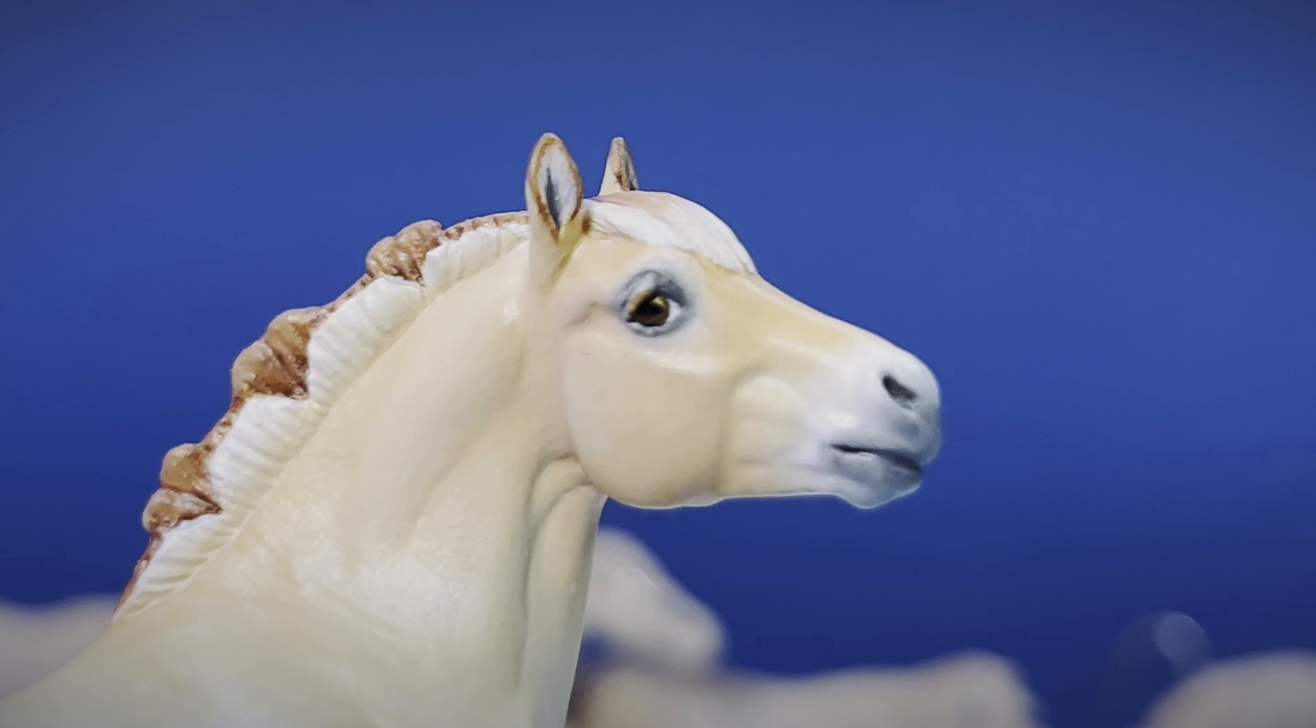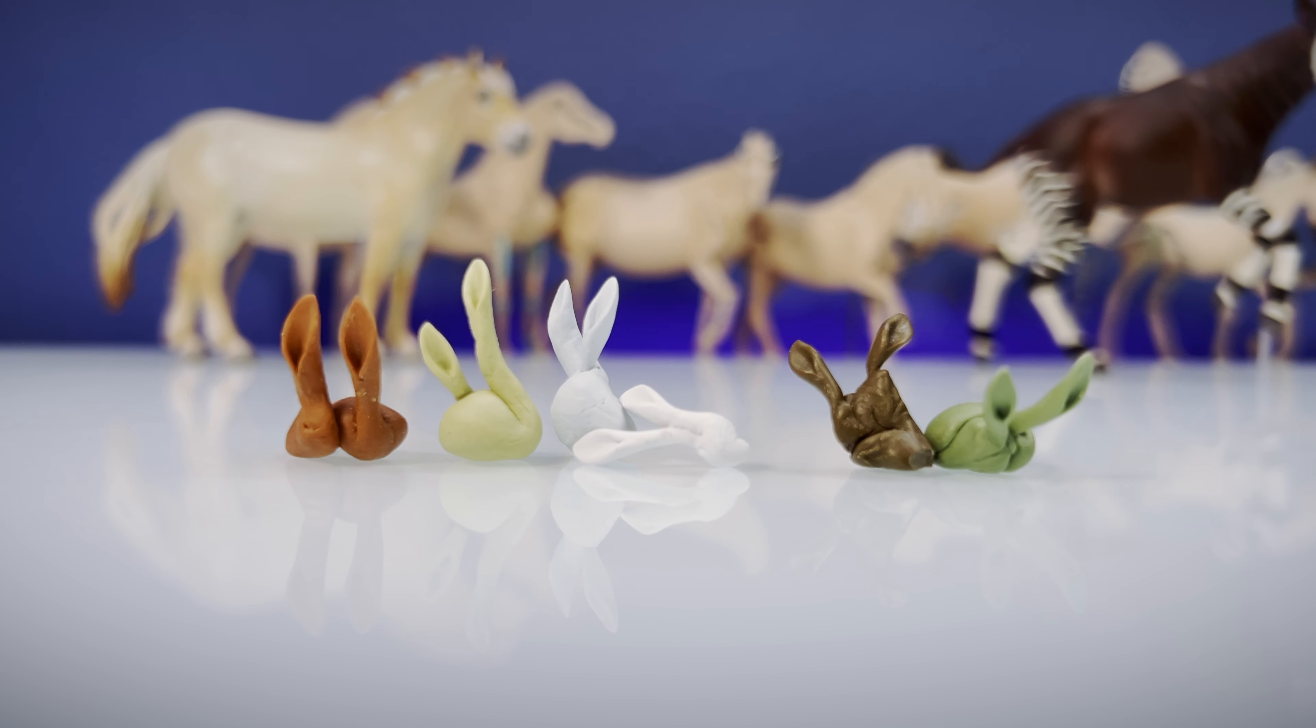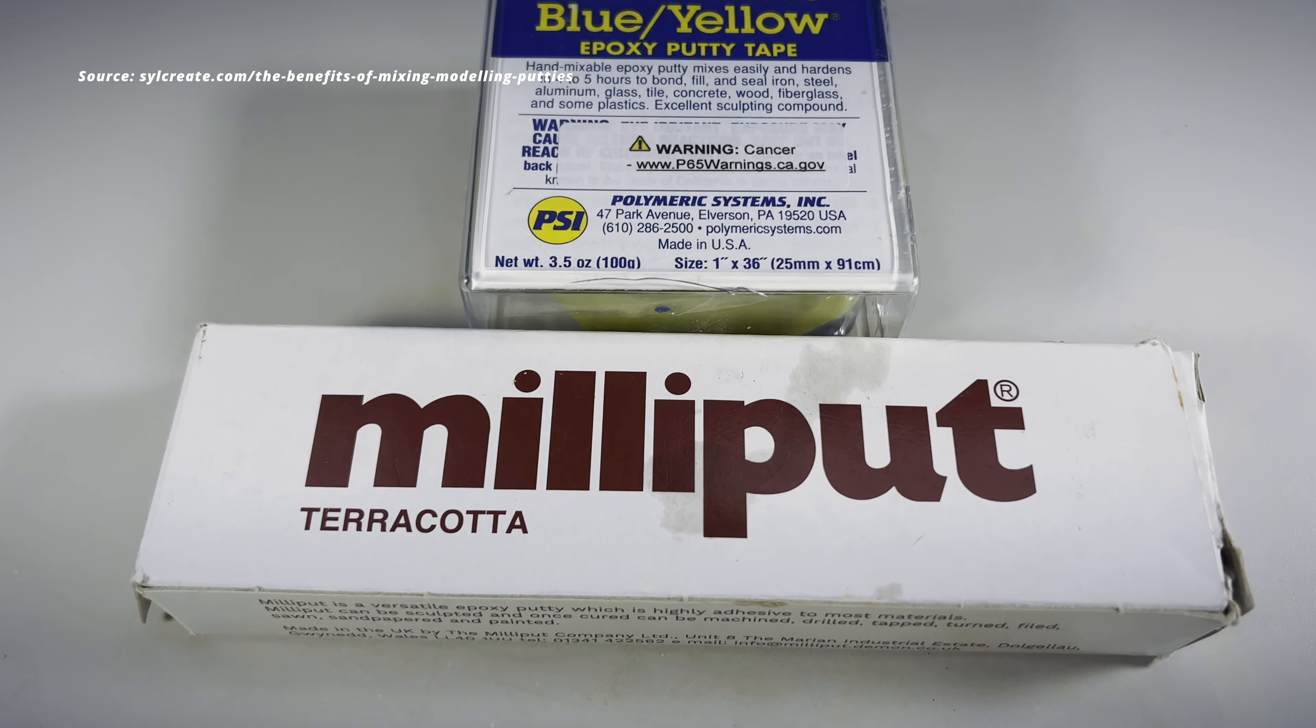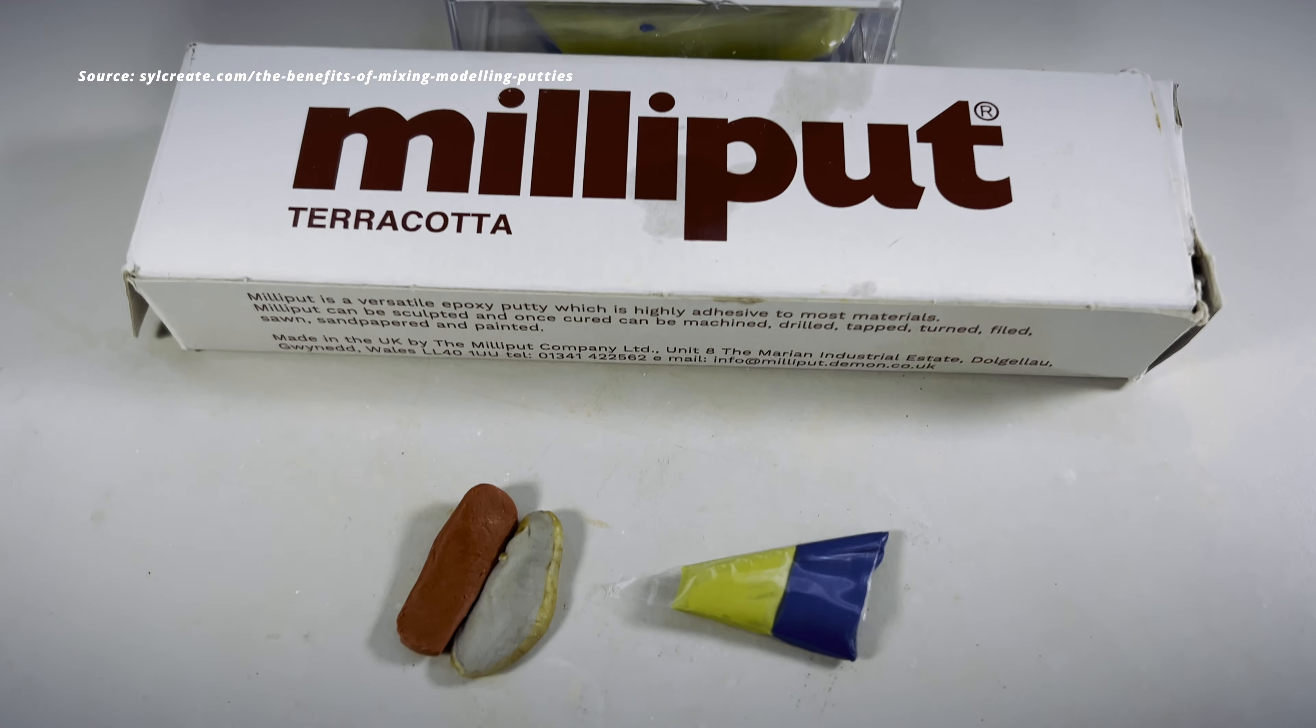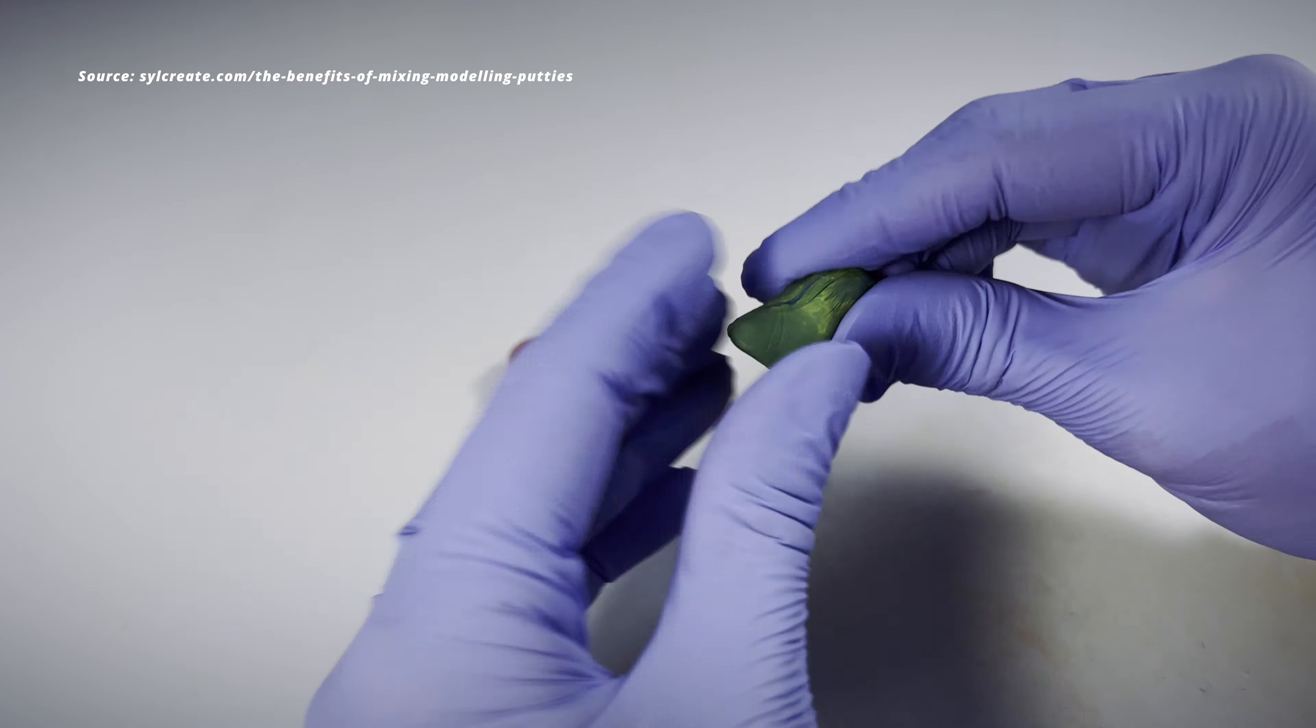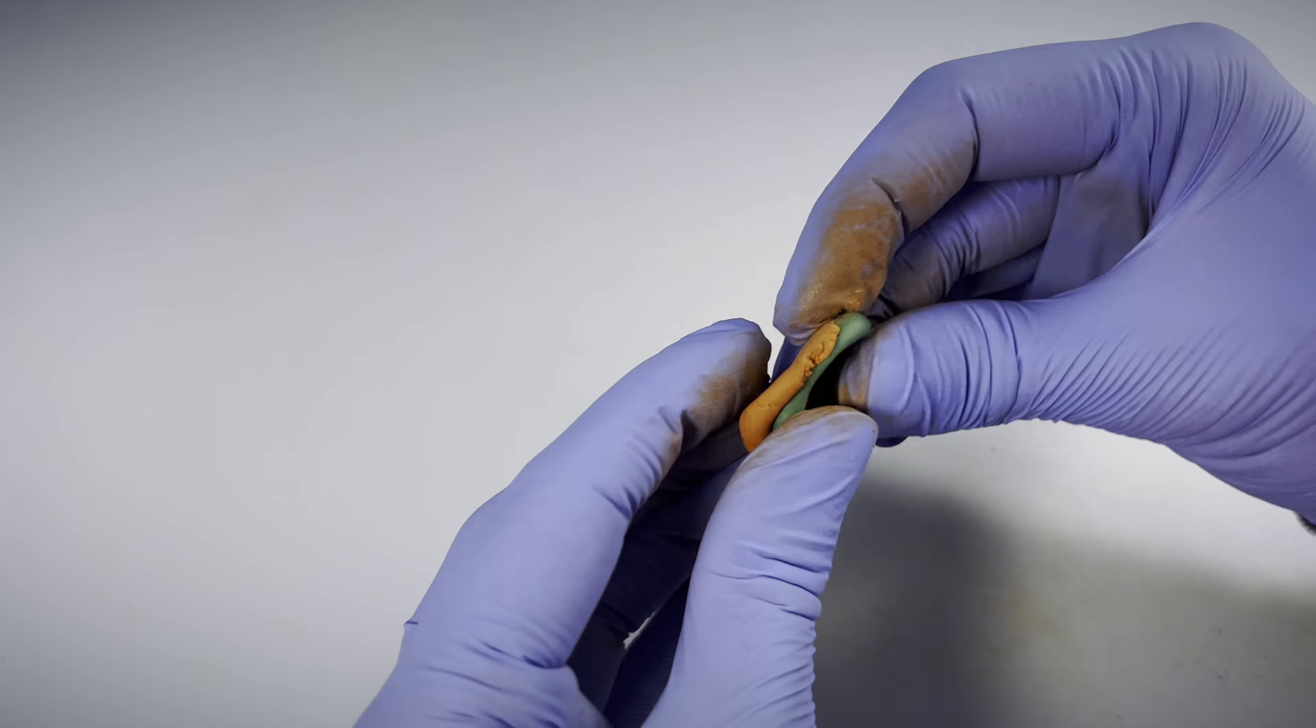In the case of extra delicate details like ears, I found it helpful to use a trick I learned of mixing these two types of putties for added durability. Mix Milliput with Green Stuff or Neatatite and bam, you've got yourself a power couple.